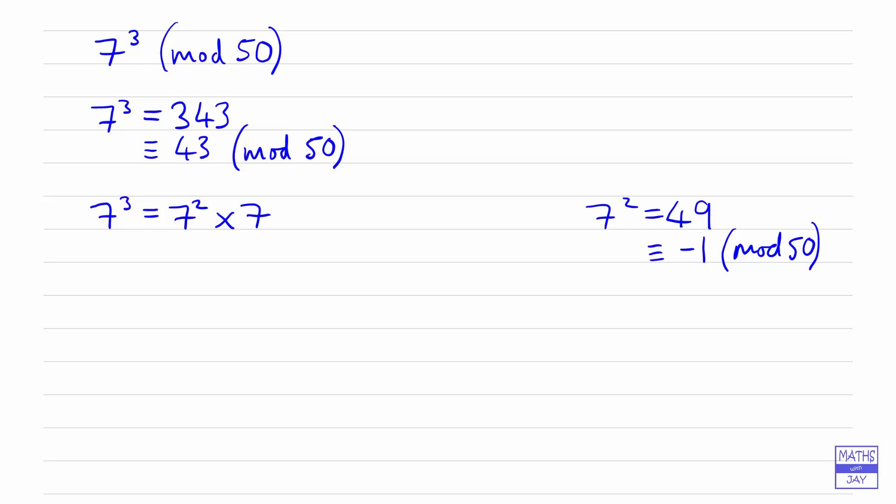So what we can do here is when we're looking for what 7 cubed is congruent to, if we write it as 7 squared times 7 we can see that if we replace the 7 squared by negative 1, so now we're looking at congruence in mod 50, then we've got that 7 cubed is negative 1 multiplied by 7. Simplifying that, doing the multiplication, we've got negative 7 mod 50 and if we add 50 to negative 7 we get 43.